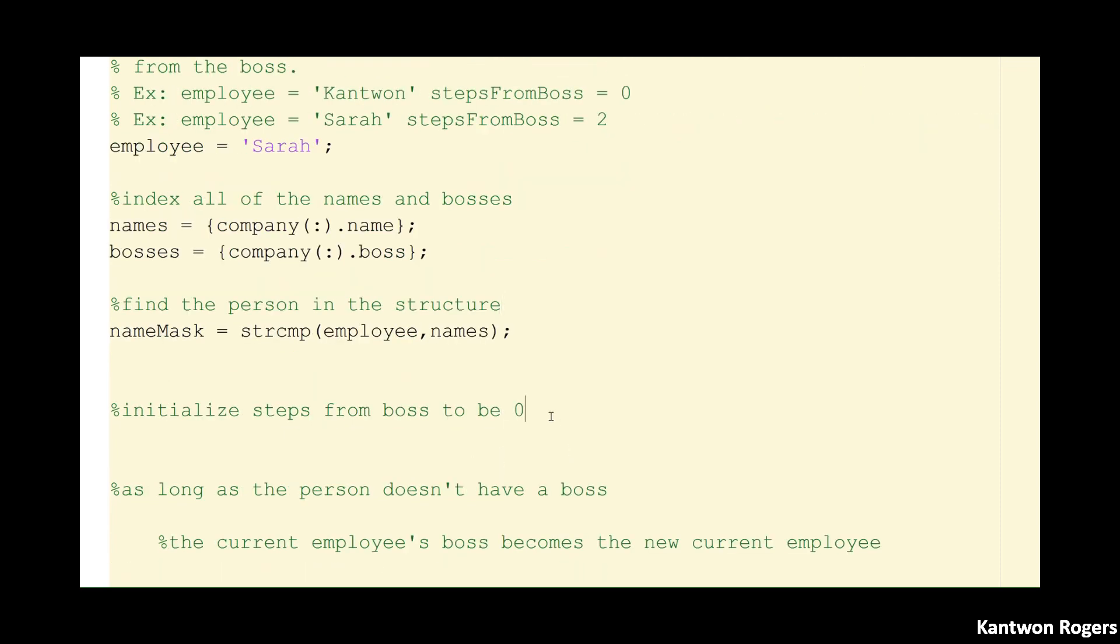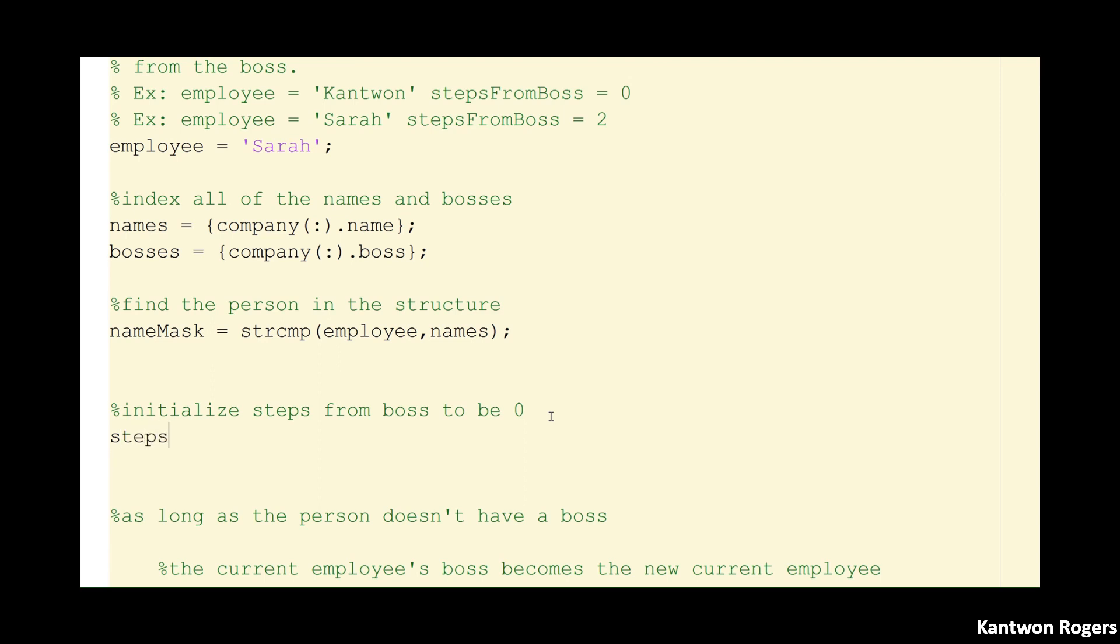And so now let's go ahead and initialize my steps from boss to be zero. Because if I get the person out and they're my boss, I want my steps from my boss to be zero, not one.